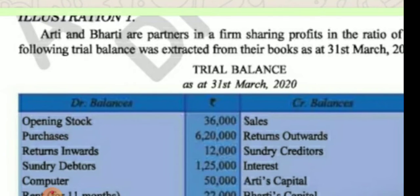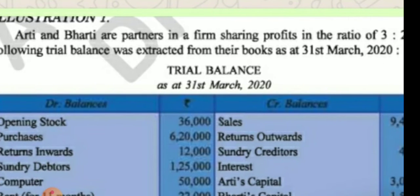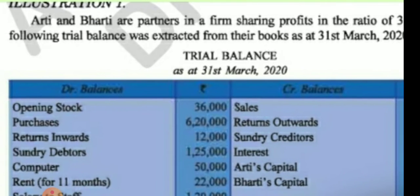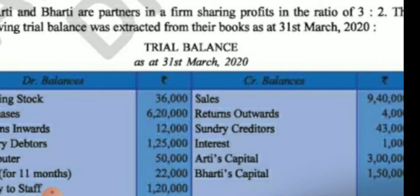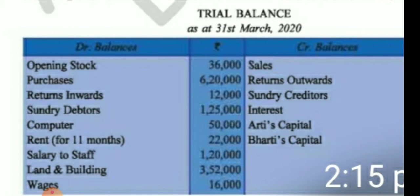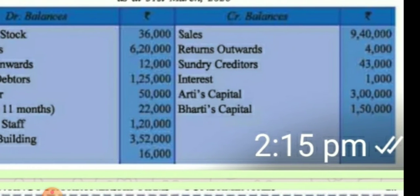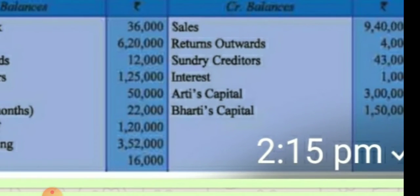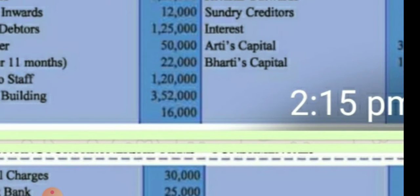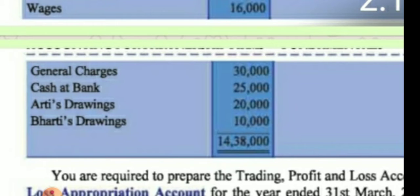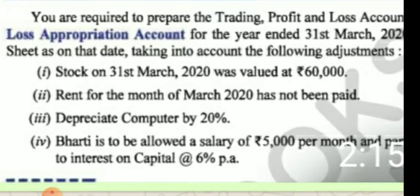Aarti and Bharti are the partners. Their profit sharing ratio is 3:2. The book is given dated 31st March 2020. Opening stock, purchases, return inward, sundry debtors, computer, rent for 11 months, salary, land and building, visits, sales, return outward, sundry creditors, interest, Aarti capital and Bharti capital are given. Also journal charges, cash at bank, Aarti drawing and Bharti drawing.